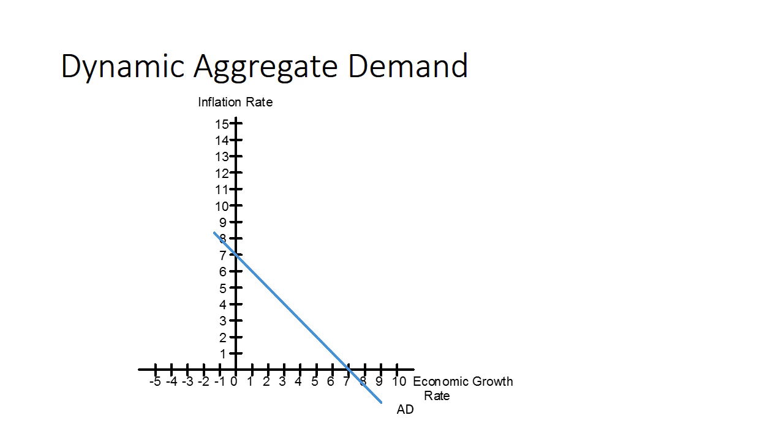You could create another table like we did a few minutes ago, and you could plot points. You would find that the line has shifted downward, or to the left.